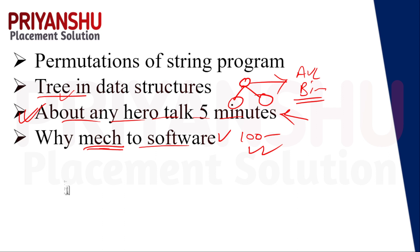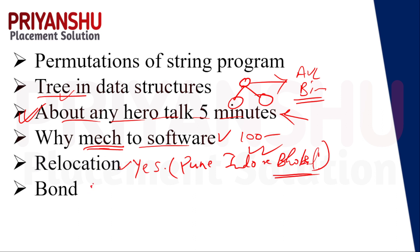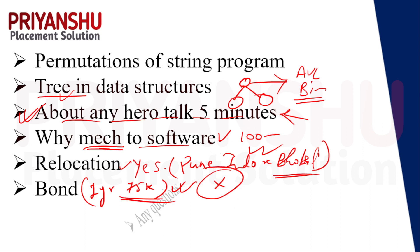The next question is relocation — are you ready to relocate? You can say yes. The next question is about a bond: are you willing to sign a bond of one year at a value of 75,000? You need to say yes. The last question is: do you have any questions for us? You can ask a question if you have one, or simply say 'No sir, I have no questions, all is clear.'